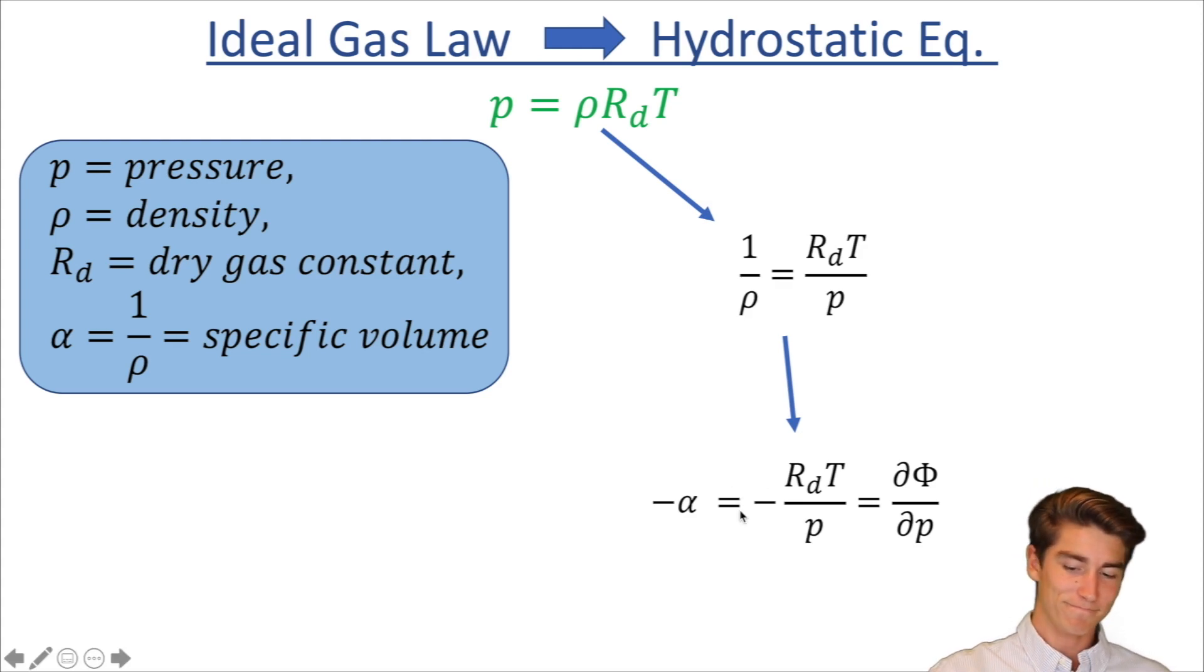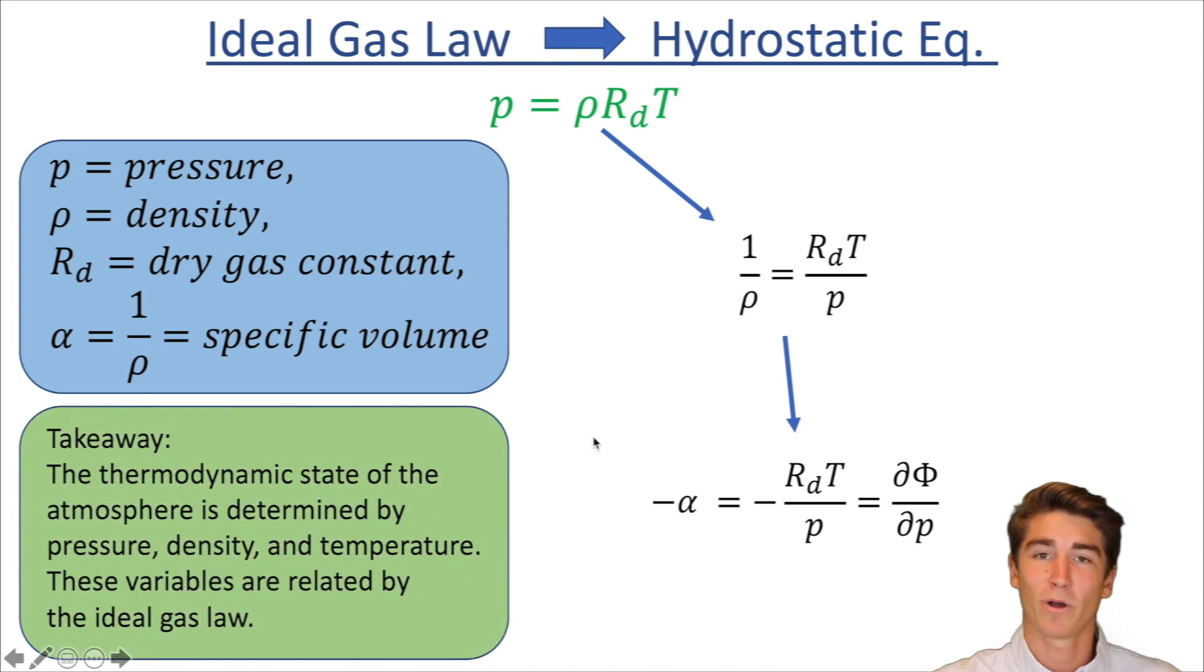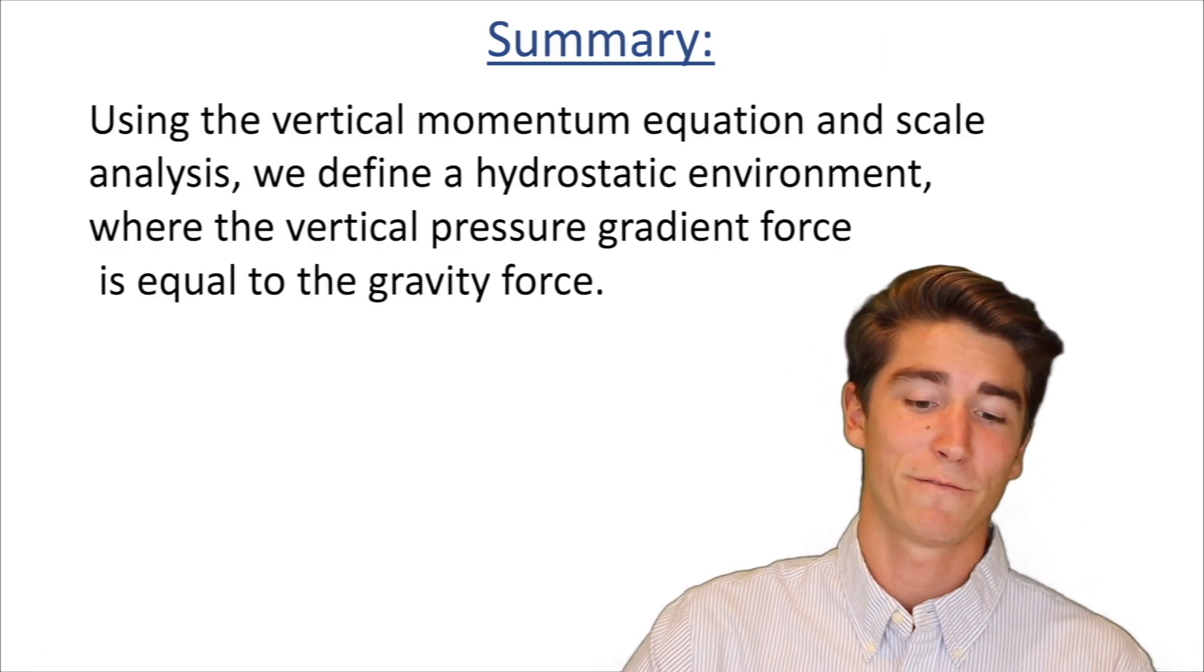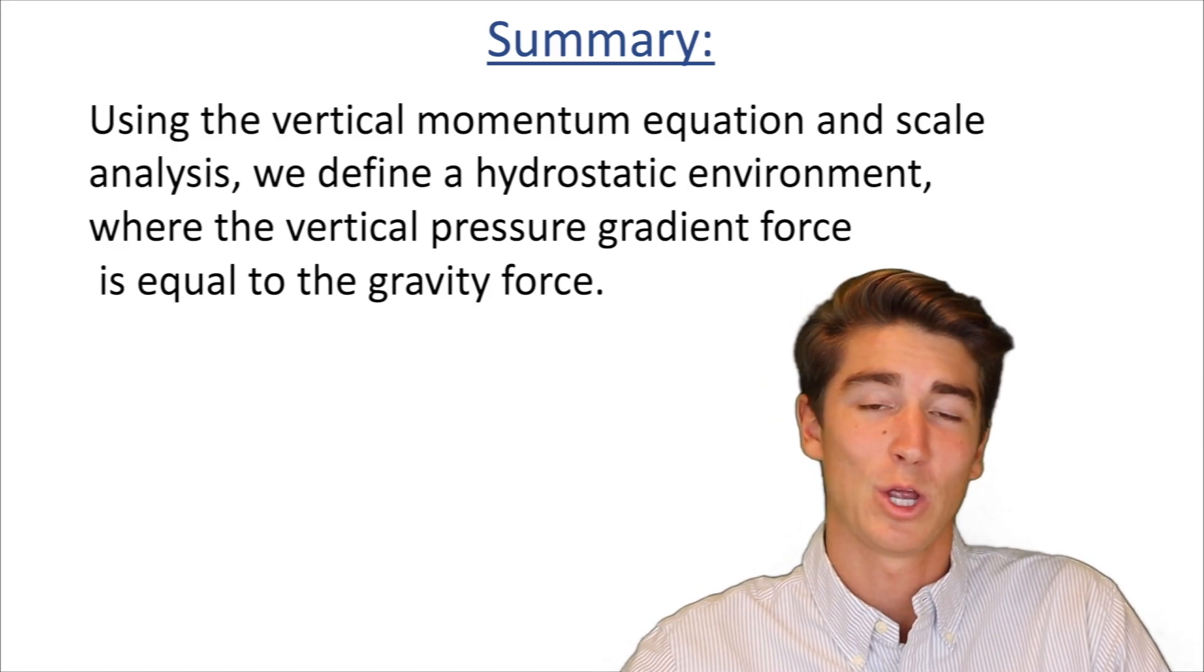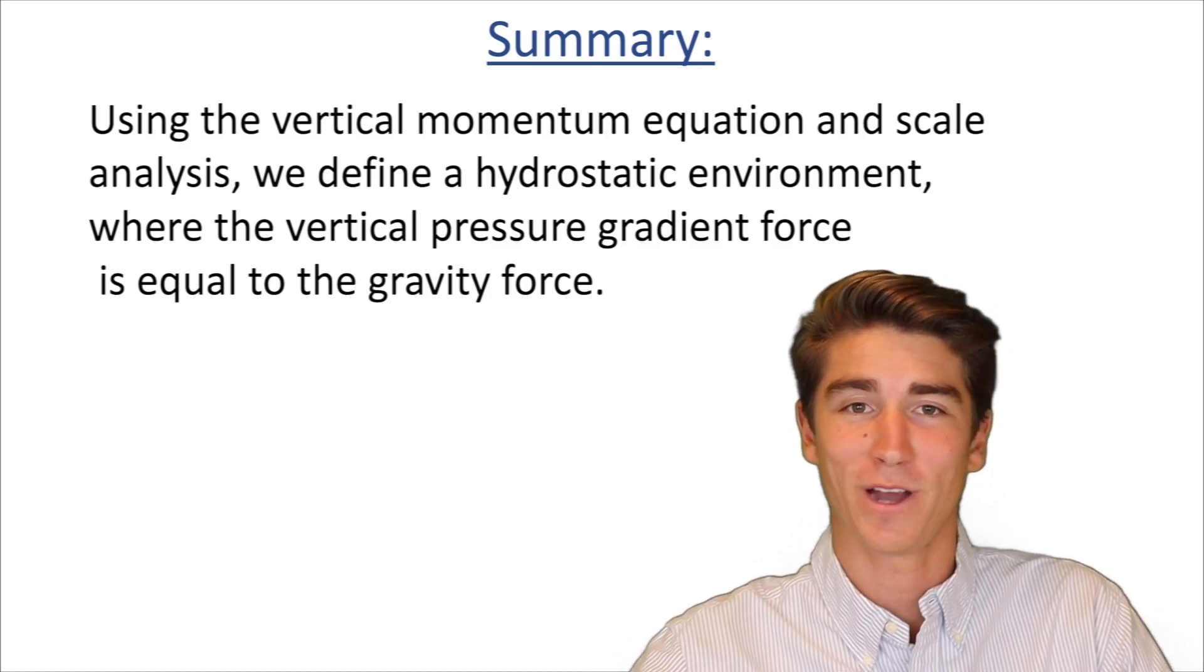So what does this equation mean? The main takeaway is that the thermodynamic state of the atmosphere is determined by pressure, density and temperature and these variables are related by the ideal gas law. And depending on these variables we're going to see the same thing we saw in that last equation, just the balance of pressure and gravity. The main summary: using the vertical momentum equation and scale analysis we define a hydrostatic environment where the vertical pressure gradient force is equal to the gravity force.